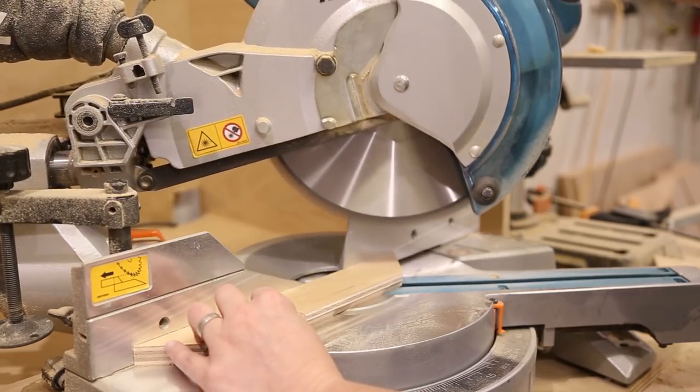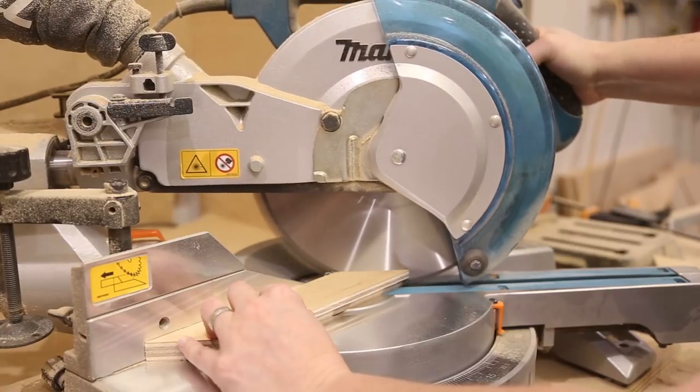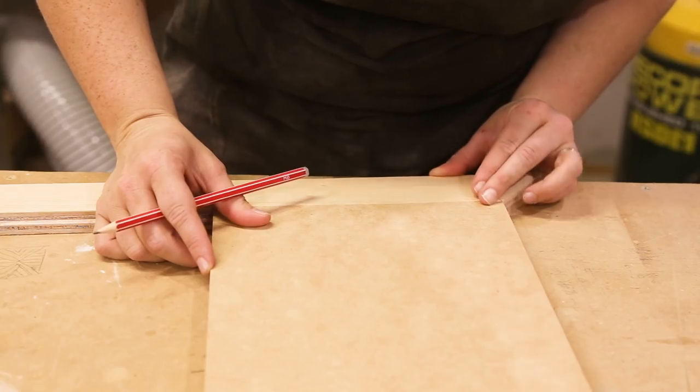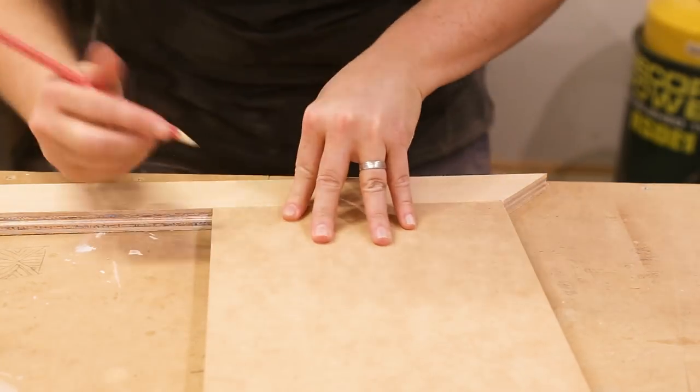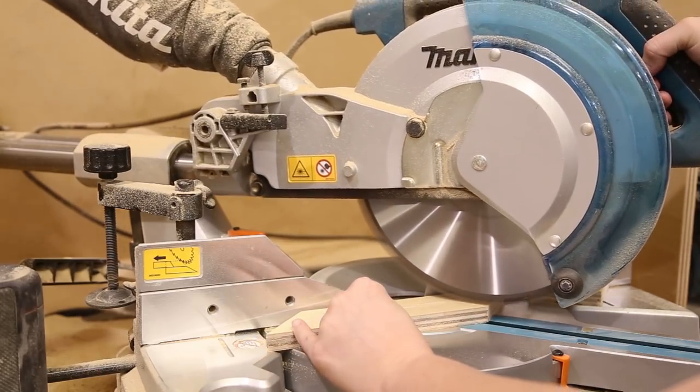When it came to cutting the MDF backing piece I made sure that I allowed for the photo size plus the width of the rabbit. I took my MDF piece and put it into the first piece of plywood and marked where I needed to cut. I then used my miter saw to make all the cuts and made my way around the board.